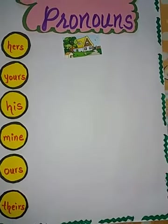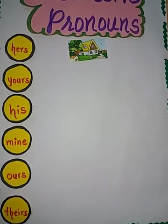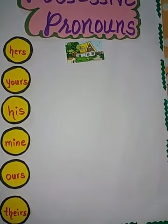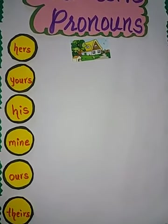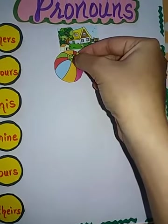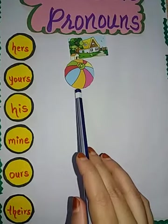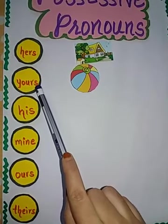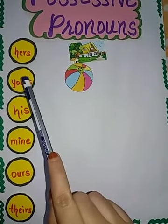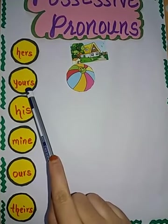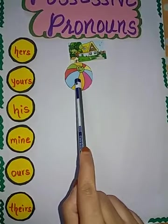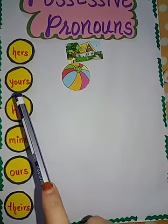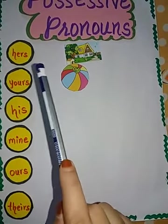Now let us come to the second one, that is yours. They do not depend on a noun and can be used without a noun, and the sentence still makes complete sense. For example: I saw a new ball. Is it yours? Here, observe that the possessive pronoun yours does not depend on the noun. In 'Is it yours?', the pronoun yours is used without a noun and makes complete sense.